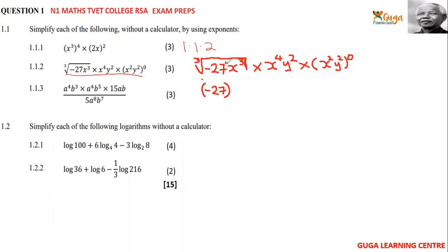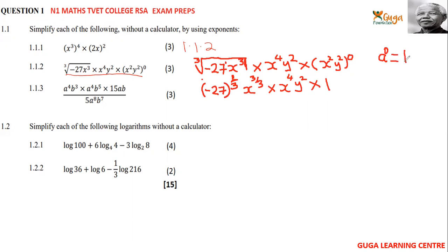Because there is a power of 1 inside, it comes up on top — the 1 over 3 rule. So it becomes negative 27 to the power of 1/3, then x to the power 3 over 3, multiplied by x to the power of 4, times y squared, times 1. The rule used here is: a to the power of zero equals 1.